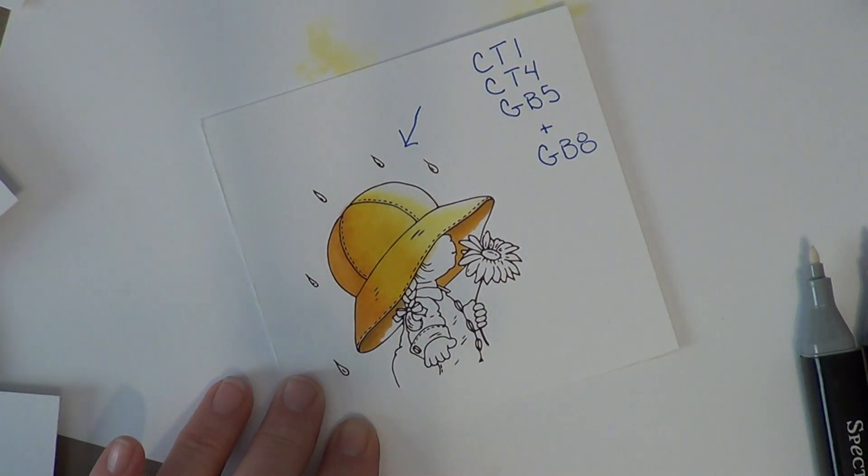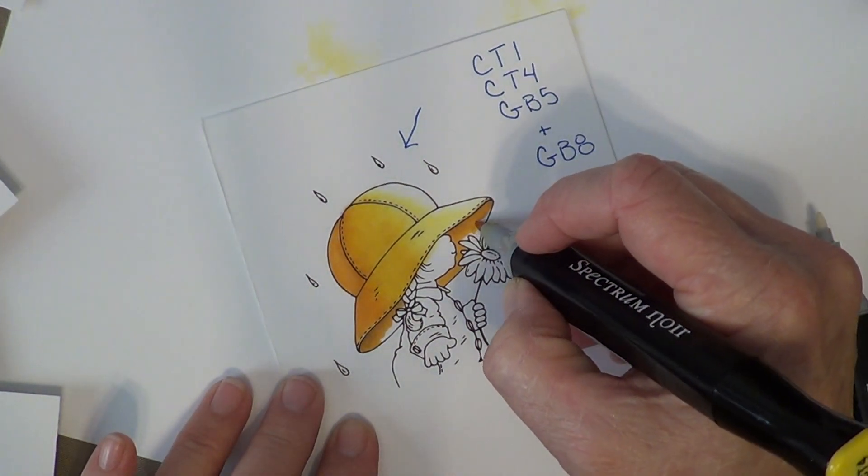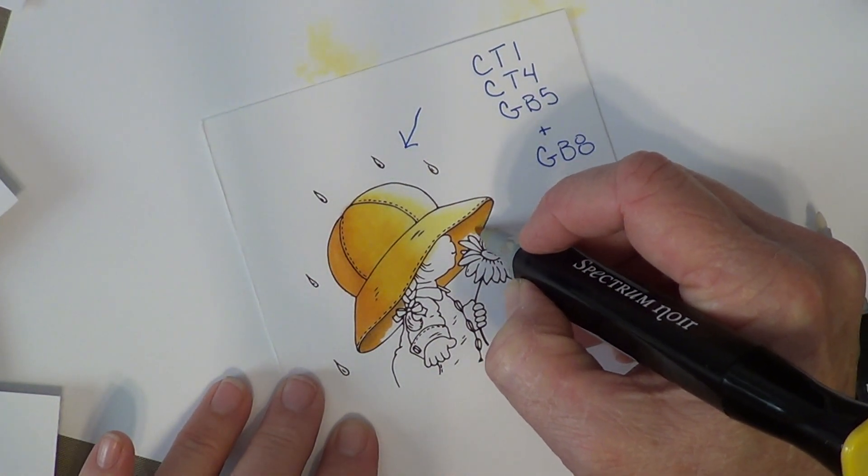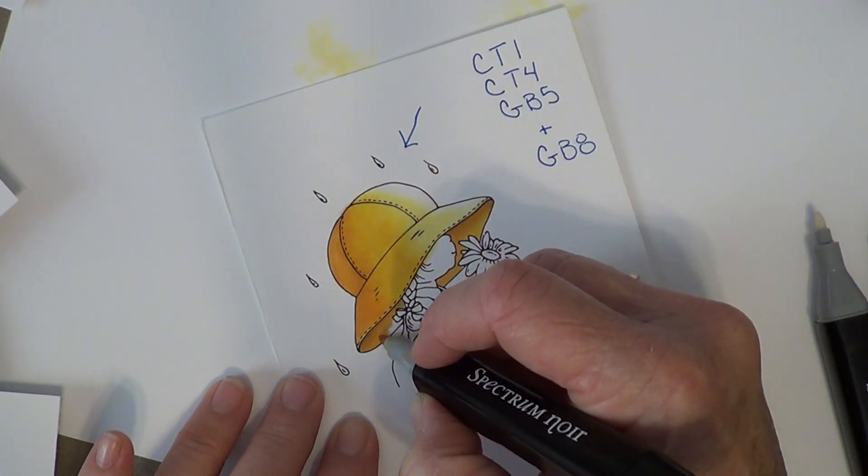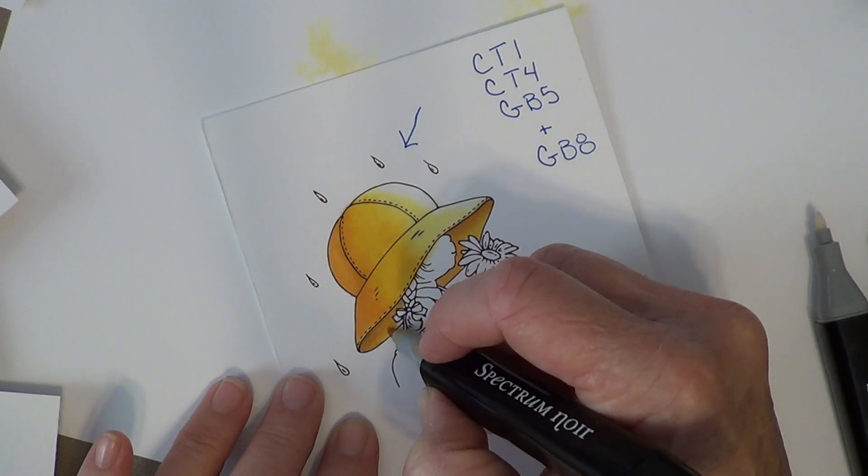Dilute the edge of that darker color and pull it down towards your edge. And now I'm going to finish it off with CT4. So I still only use three colors down here. I just didn't use the lightest color and I added in one more dark color.